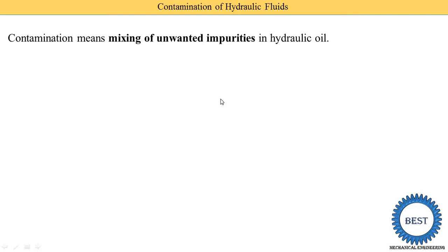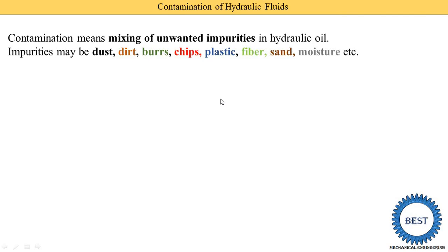The impurities that cause contamination may be dust, dirt, mud, chips, plastic, fiber, sand, and moisture. Dust is present in the atmosphere and can enter the oil through leakage. Small particles removed due to wear and tear of components — called burrs — along with chips, plastic, fiber, sand, and moisture, when added to hydraulic oil, constitute contamination.